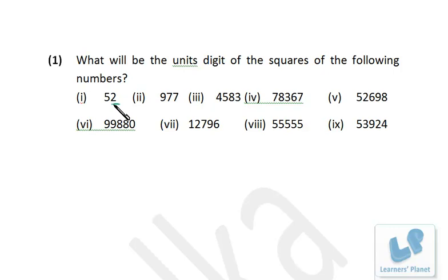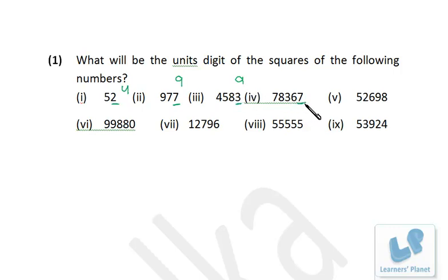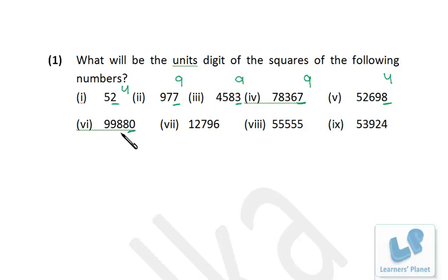Applying the unit digit rule: for 52, unit digit is 2, so 2²=4 — the square of 52 ends in 4. For a number ending in 7, the square ends in 9. For 4583, unit digit is 3, so 3²=9 — square ends in 9. For a number ending in 7, 7²=49, so the square ends in 9. For 52698, unit digit is 8, 8²=64 — square ends in 4. For a number ending in 0, square ends in 0.